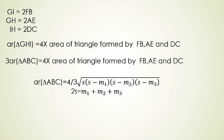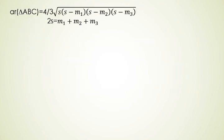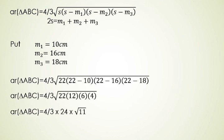Now, if we know the three sides of a triangle we can use Heron's formula. The area of triangle ABC is equal to (4/3) × √(S(S−M1)(S−M2)(S−M3)), where M1, M2 and M3 are the medians FB, AE and CD. Putting M1 = 10, M2 = 16, M3 = 18, we get the area of triangle ABC is equal to 30√11 cm².